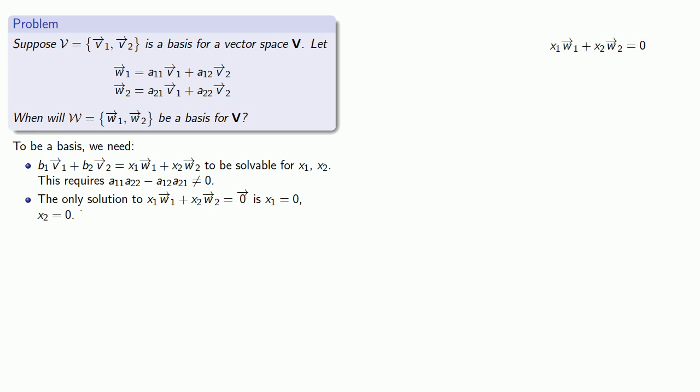Since we know W1 and W2 in terms of V1 and V2, we'll substitute those in and collect our coefficients. Now it's worth noting that right now we have linear combination of the V vectors equal to the 0 vector. Since we know that V is a basis, then this means that the only solution to this system of equations occurs when these coefficients are both equal to 0.